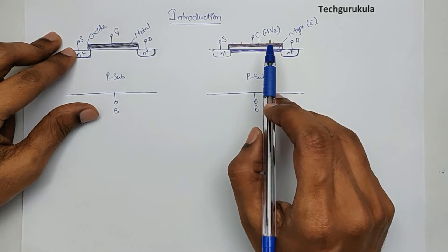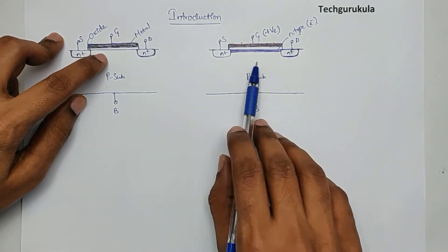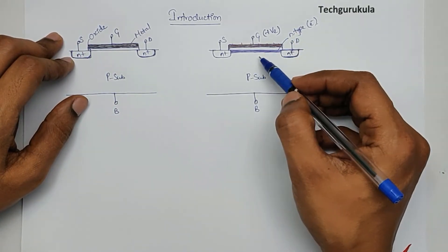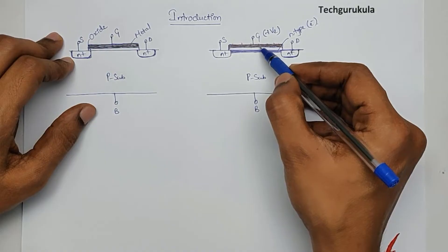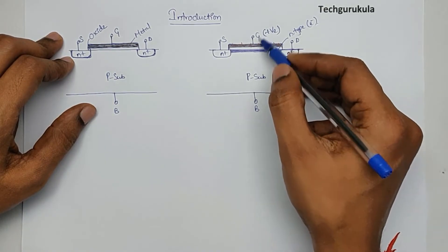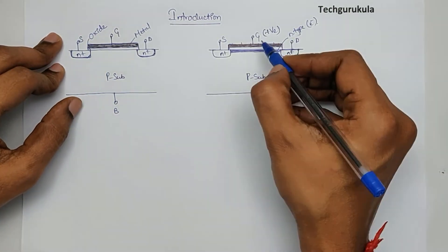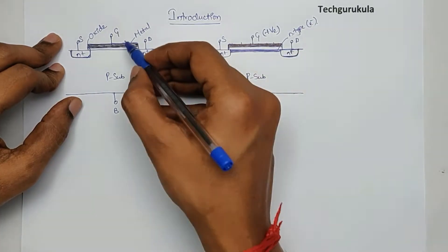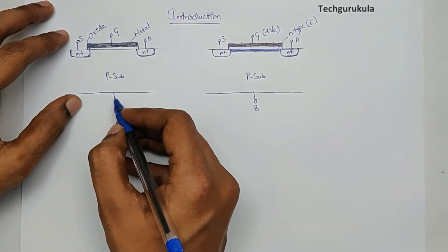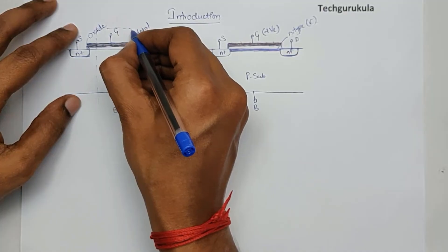This means the MOSFET can be made into an OFF-ON switch, and the major operation enabling this is because of the gate — which is metal, oxide, and semiconductor operation. To understand MOSFET operation better, we need to understand how this metal-oxide-semiconductor structure works. Hence, I'm going to focus on this structure, which is most important to understand the operation and working of MOSFET.